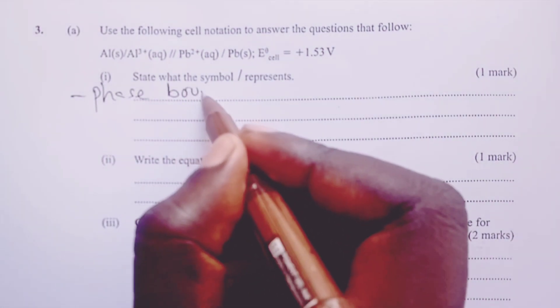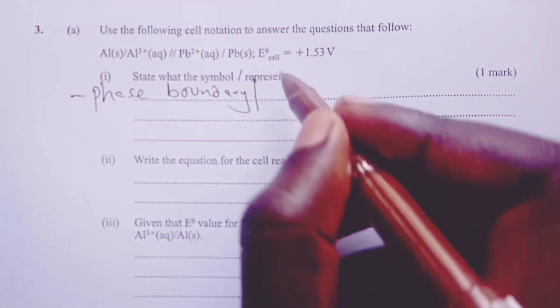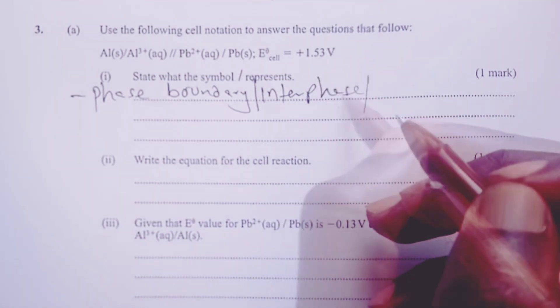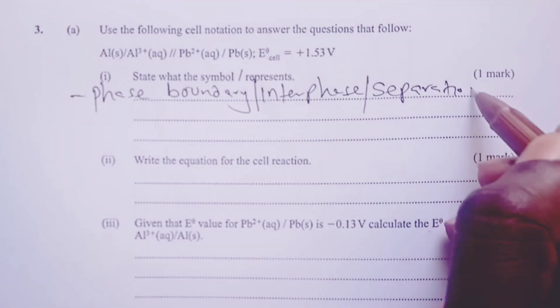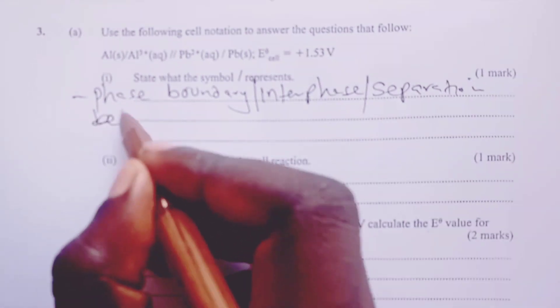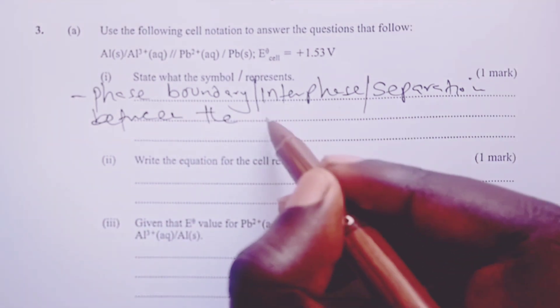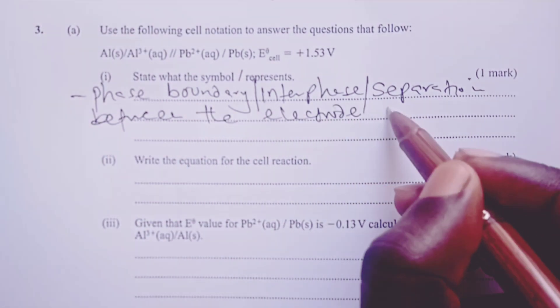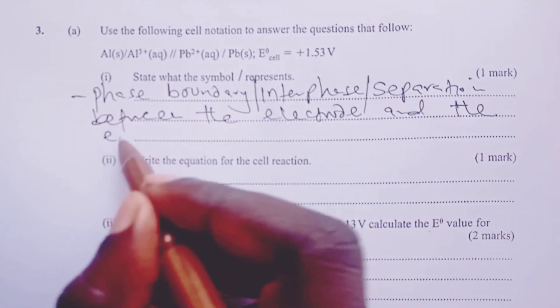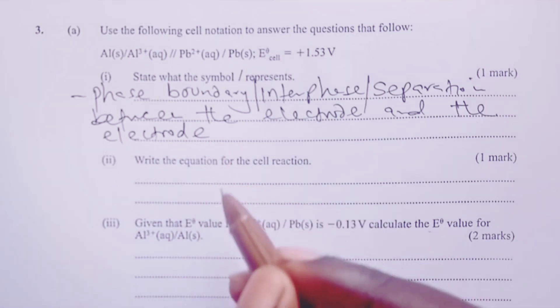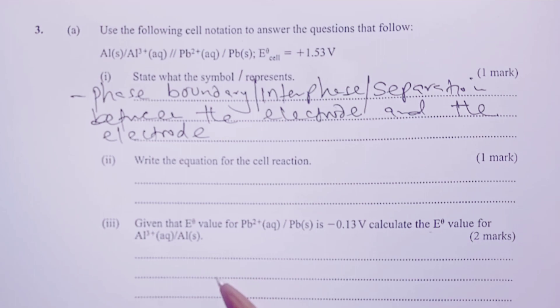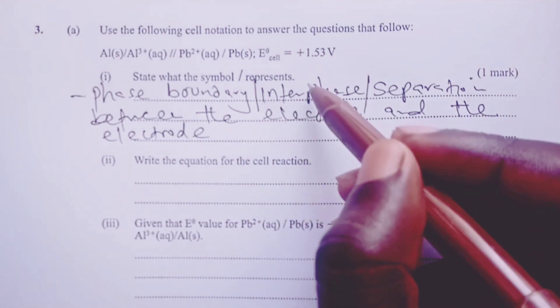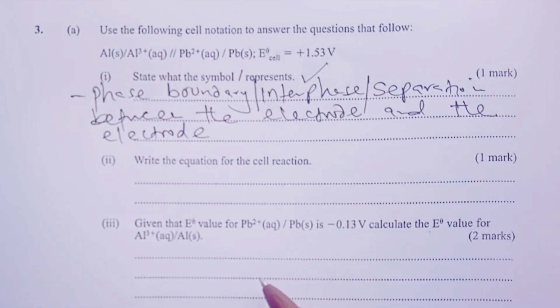It is the phase boundary or we can call it the interface. The phase boundary, interface, or even separation between the electrode and the electrolyte. So any of those three, either phase boundary, interface or separation would be the meaning of the symbol as used in half cells for one mark.